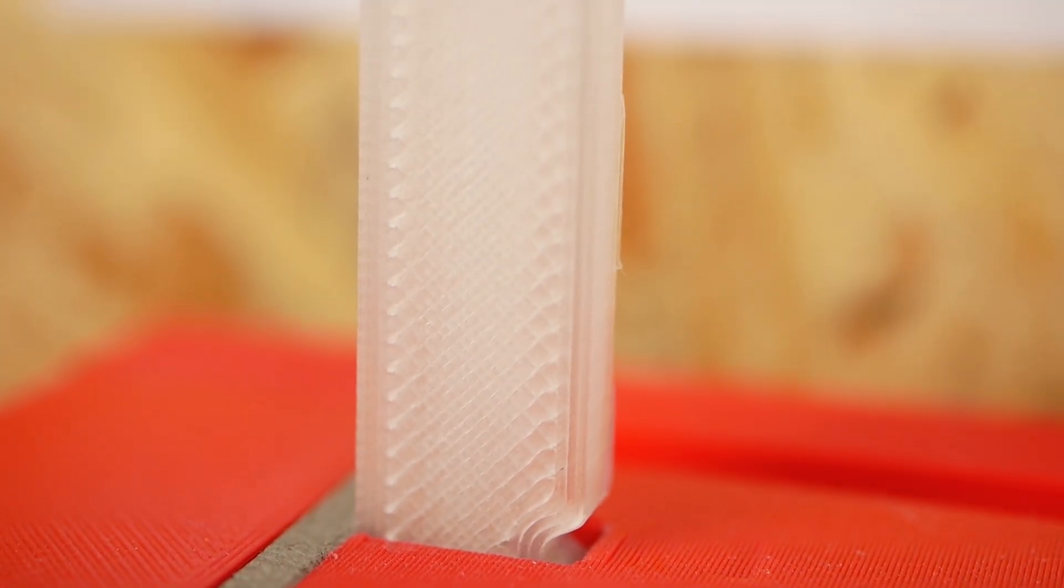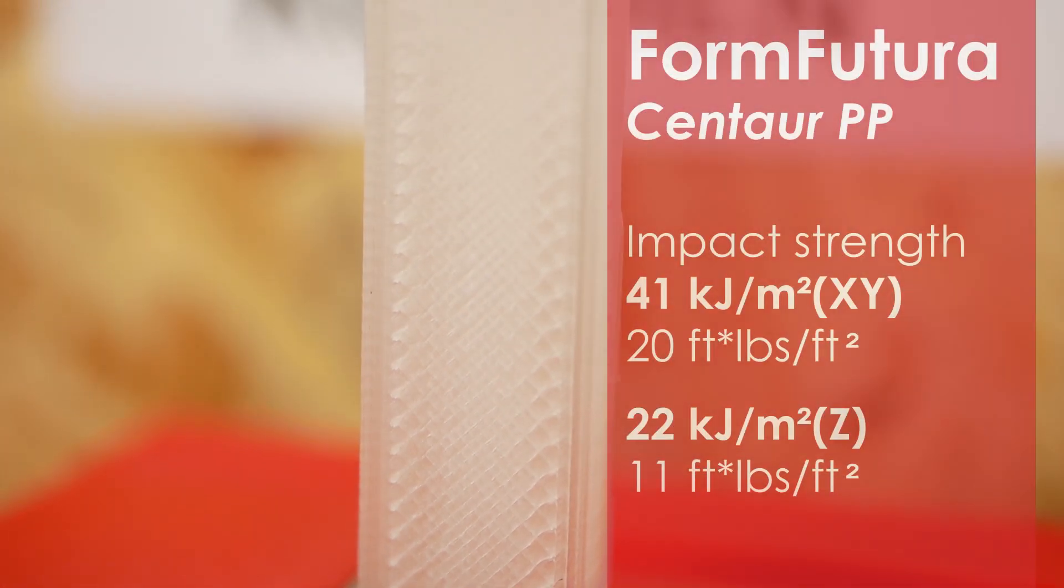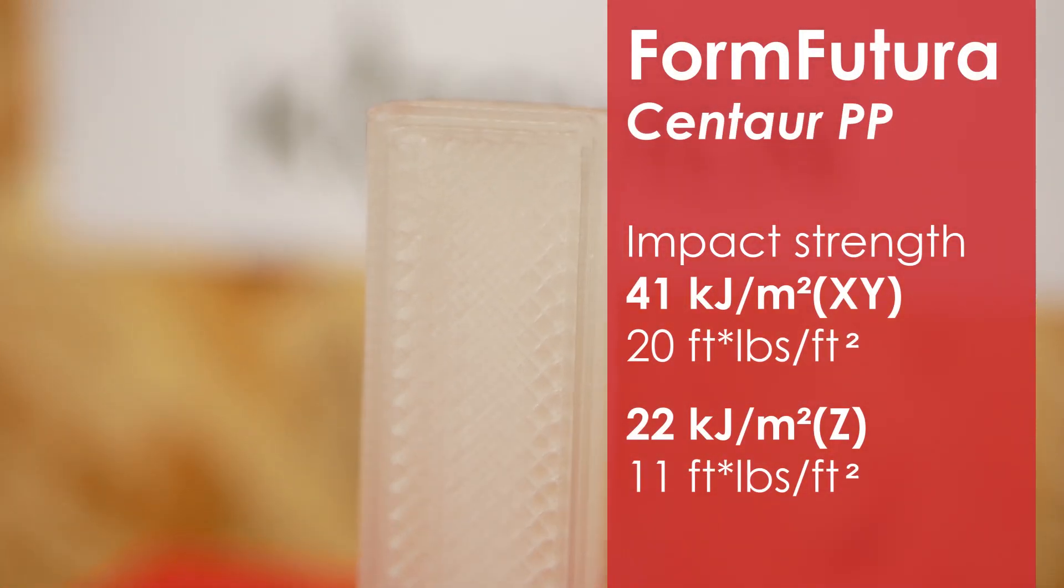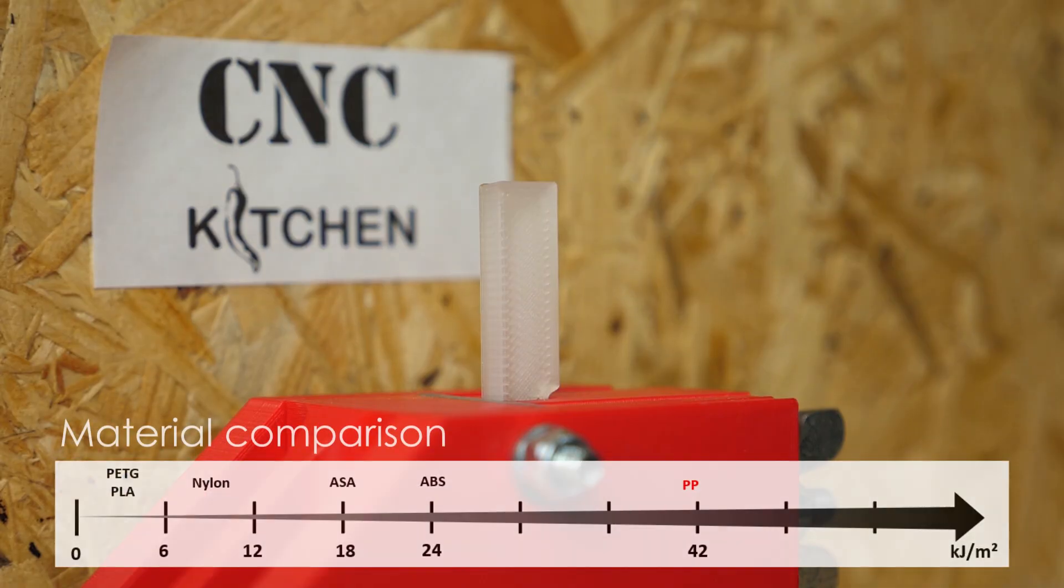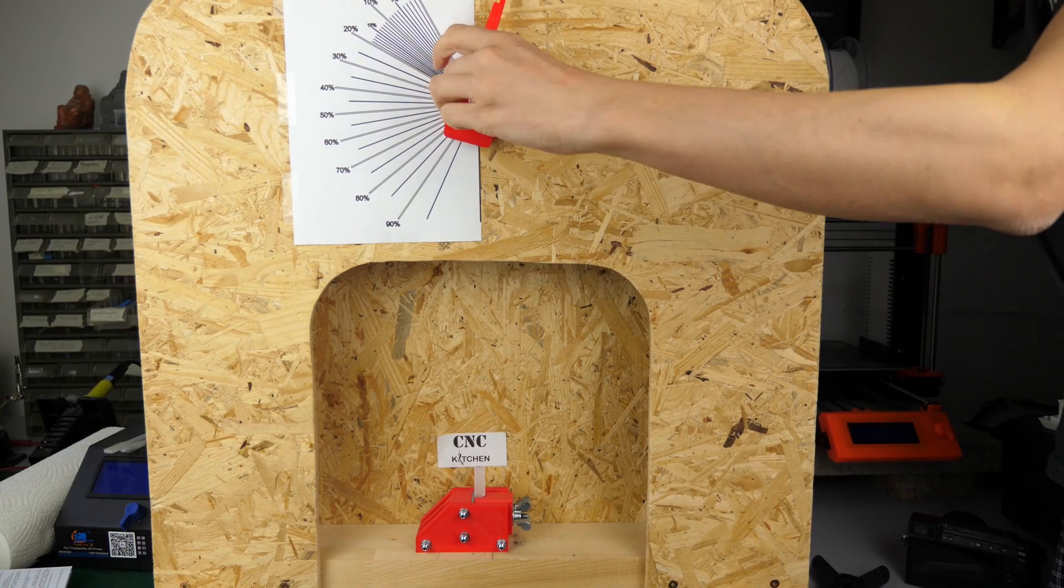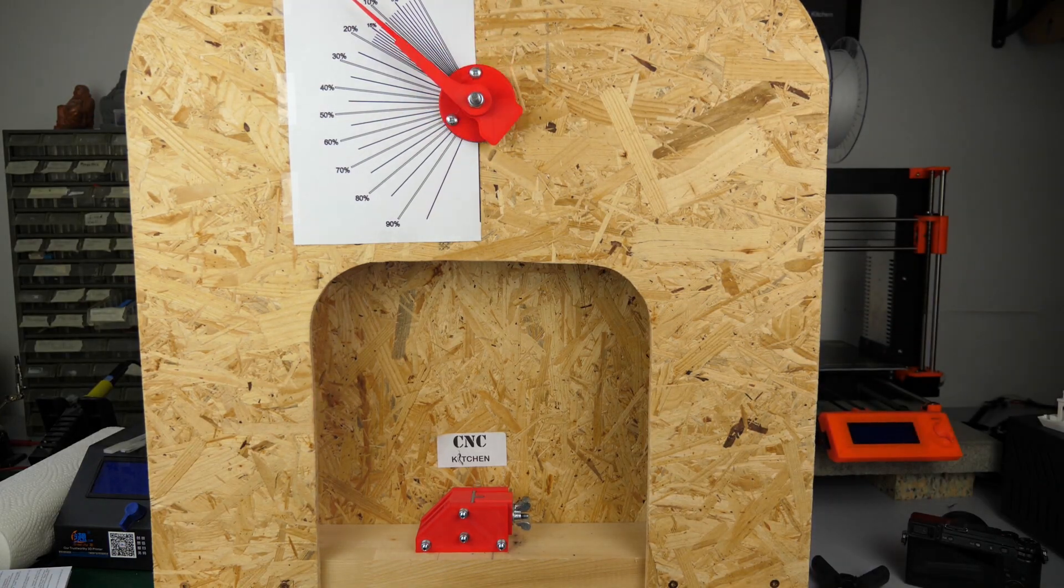The IZOD impact test showed another property of PP very well because its impact resistance is way higher than most other materials, absorbing almost all of the energy of the impact hammer. And again, even the standing specimens performed better than most other materials.